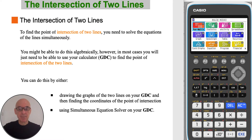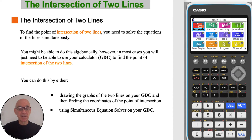You might be able to do this algebraically, however in most cases you will just need to be able to use your calculator to find the point of intersection of the two lines. You can do this by either drawing the graphs of the two lines on your calculator and then finding the coordinates of the point of intersection, or by using a simultaneous equation solver on your calculator.